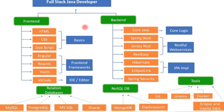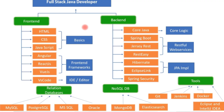For the backend, you should use either Spring Boot or Jersey Services — you need to know at least one JPA implementation. You can work with Spring, or you can use Hibernate. Between the two, Hibernate is preferred as it is better. Spring and Hibernate together are a great combination for backend development.